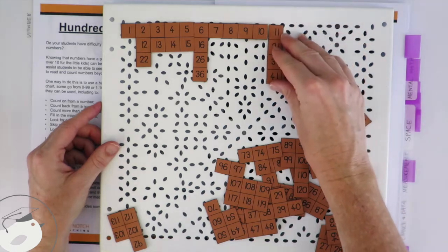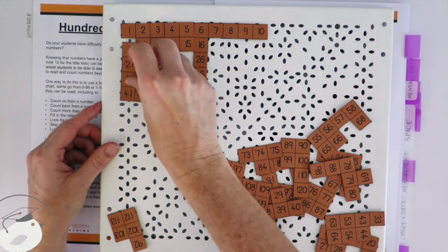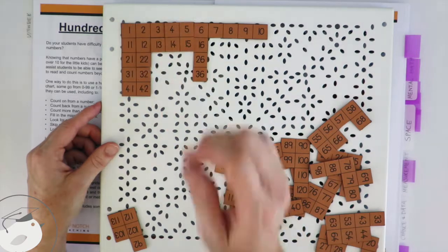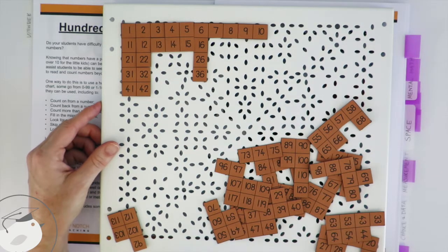And then what I do is I've just got little ziplock bags that I keep the bits in, and I'll put on the bag whether it's 0 to 99 or 1 to 120, just so it's easy to keep track of.